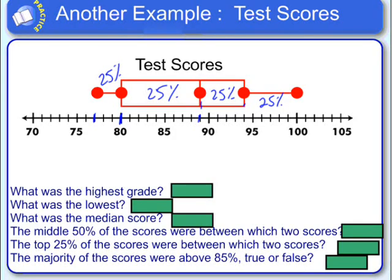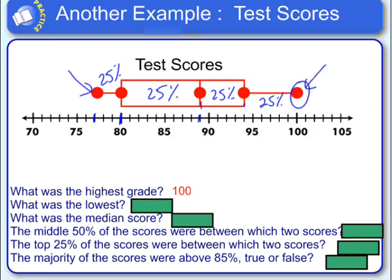Let's see if we can answer some questions. What was the highest grade on the test? The maximum value was a 100. Now remember, that doesn't mean just one student got a 100 — that could mean five, six, seven, or eight students got 100s. What was the lowest score on the exam? The minimum value is a 77, and again, that could be more than one student.